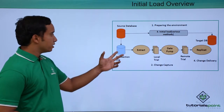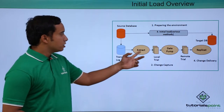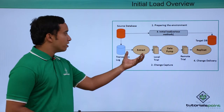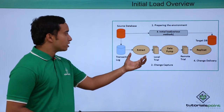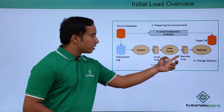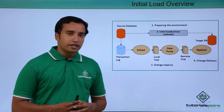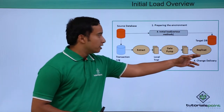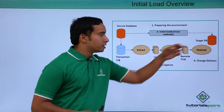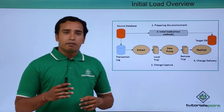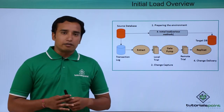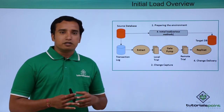If you see the architecture, this is the usual GoldenGate process, where when we extract the data, put it in the trail file, and using data pump, we send it to the remote trail file, and there is a replicat process which replicates the data into the target database.